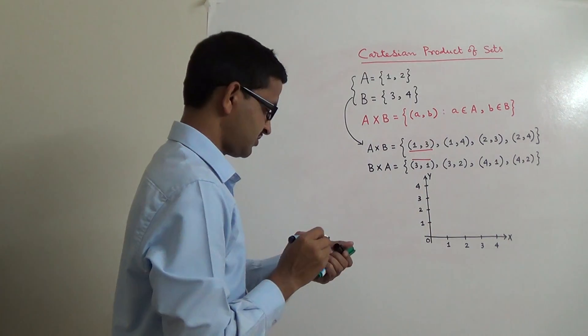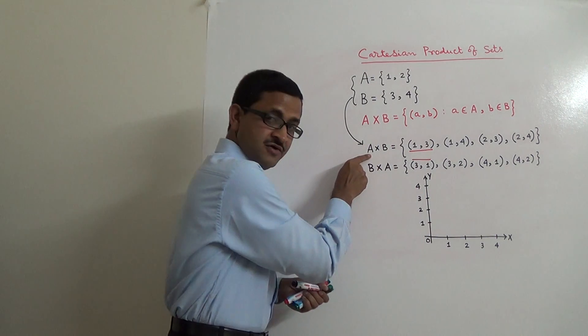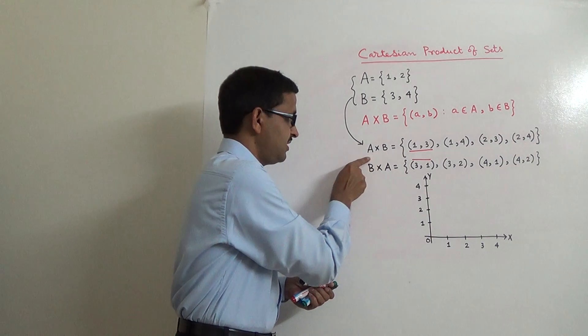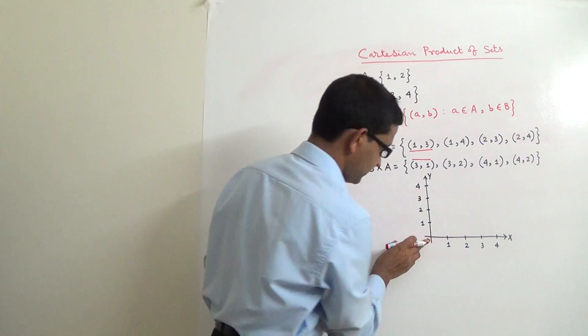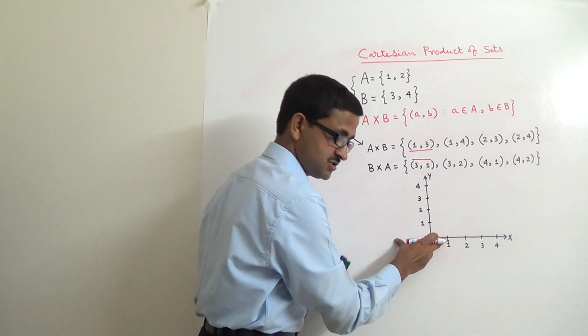Then, (1,3), that element, the first element in the set A cross B, (1,3) will be here.